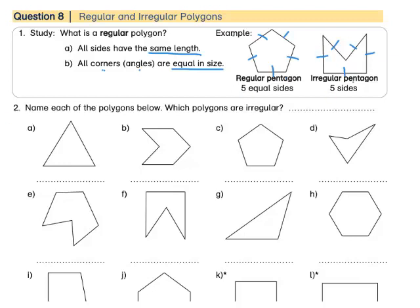Question 2: name each of the polygons below, and then write down which polygons are irregular. For A, it has 1, 2, 3 sides. If you look, you can measure to check — these 3 sides are equal in length, and these 3 angles are also the same size. This is a triangle, and it is a regular triangle.